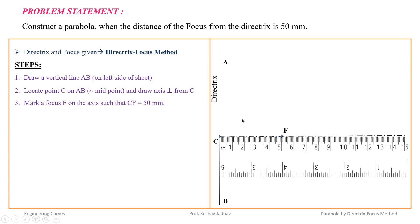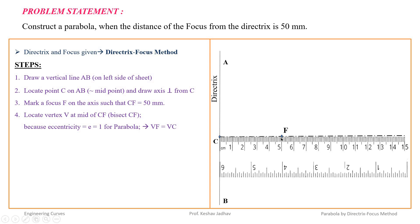For a parabola, eccentricity is equal to 1, meaning the distance of a point on the curve from the focus divided by its distance from the directrix equals 1. The vertex V is a point on the curve that maintains eccentricity equal to 1. Since CF is equal to 50 mm, the vertex V will be at 25 mm from C, so that VF upon VC is equal to 1.